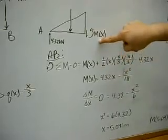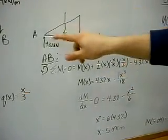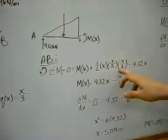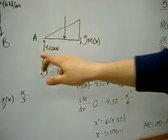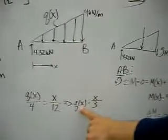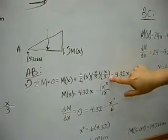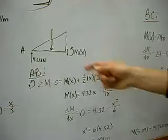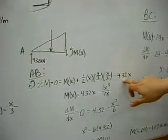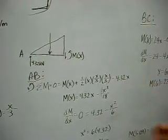We have the positive M of X. This is our distributed load, which is the area of the triangular distributed load, half times base times height times the moment arm. Base is X, height is X over 3, which is Q of X. This is the moment arm, which acts one-third of X away from where we're summing the moments. We also need to include the reaction force at A times X.